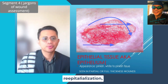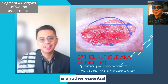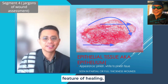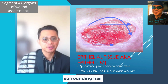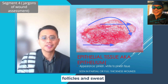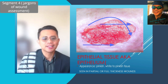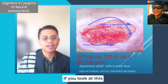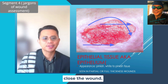Epithelialization, or re-epithelialization, which begins a few hours after injury, is another essential feature of healing. Resurfacing of an injured tissue is accomplished by the movement of keratinocytes from three edges, including those surrounding hair follicles and sweat glands at the wound edges. These cells are now ready to migrate in a leaf-frog manner towards the center to resurface or close the wound.